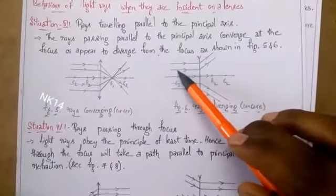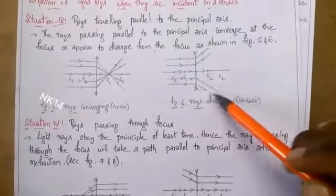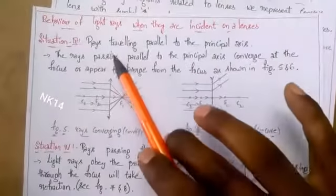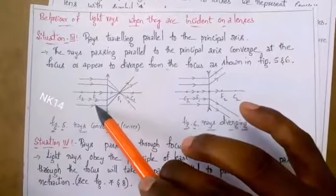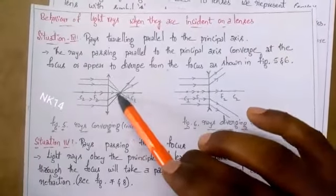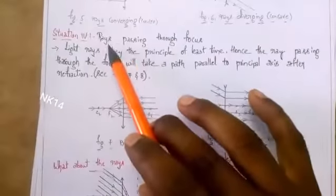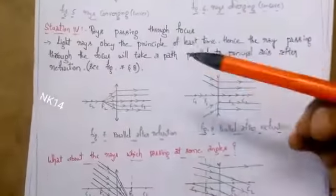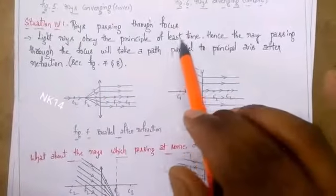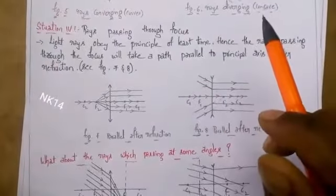In the concave lens, the rays passing parallel before refraction get diverged after refraction. So in summary: after refraction, parallel rays converge in the convex lens and diverge in the concave lens. Moving to Situation 4 — rays passing through the focus.